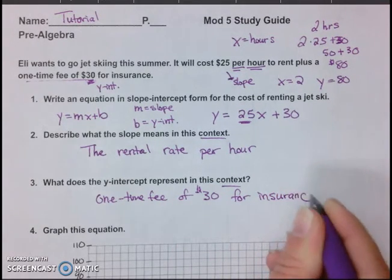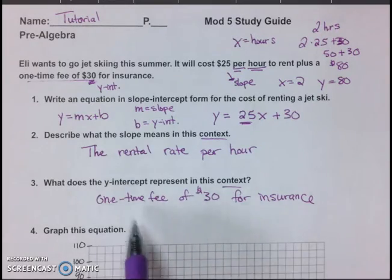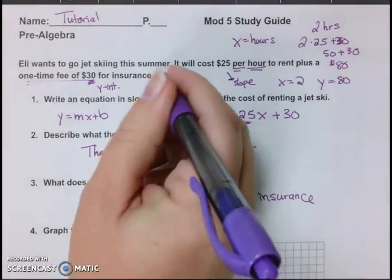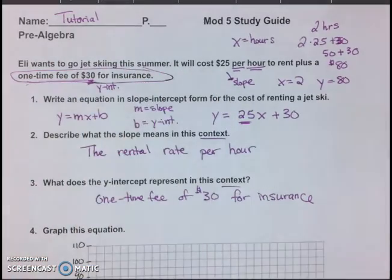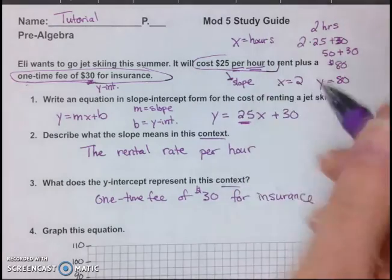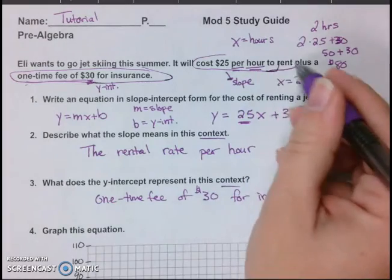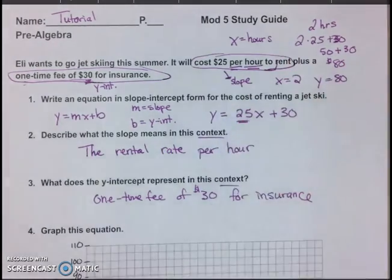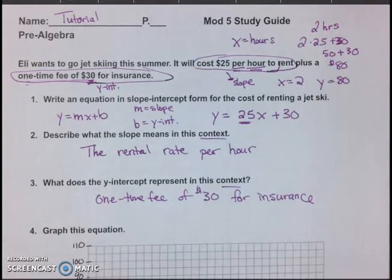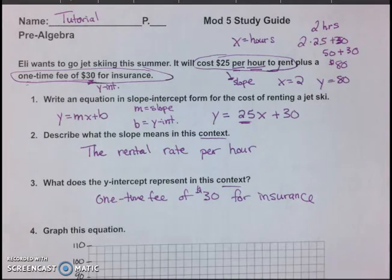So the y-intercept represents the one-time fee of $30 for insurance. If you're ever not sure how to word it, look at this. One-time fee of $30 for insurance. You can write it word for word. I have in that description. You can write, it will cost $25 per hour to rent. You can write that word for word, and you would get it right in the story problem. So write what those numbers are word for word. If you want to use that kind of little trick, if you have trouble with describing that.